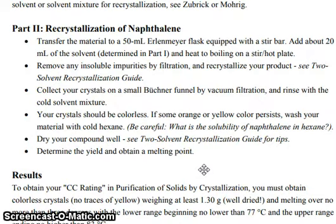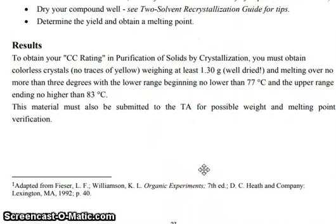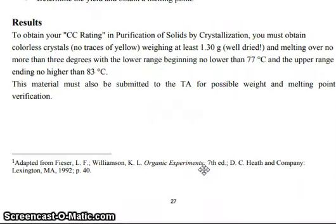Collect your crystals on a small Buchner funnel by vacuum filtration and rinse with the cold solvent mixture. Your crystals should be colorless. If some orange or yellow color persists, wash your material with cold hexane. Be careful about the solubility of naphthalene in hexane. Dry your compound well, then determine the yield and obtain the melting point.